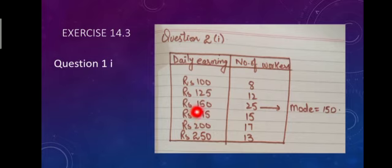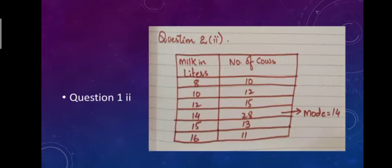Okay, after Question 1, Part 2: milk in liters and number of cows. We have to find the mode. 8 liters, 10 cows; 10 liters, 12 cows; 12 liters, 15 cows; 14 liters, 28 cows; 15 liters, 13 cows; 16 liters, 11 cows. You have to find out the mode. Simply recall the definition: